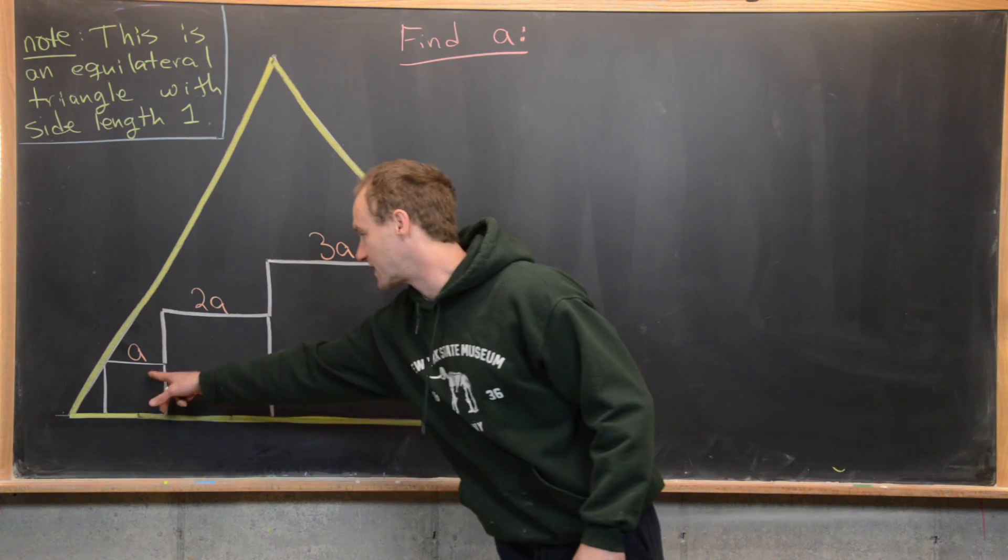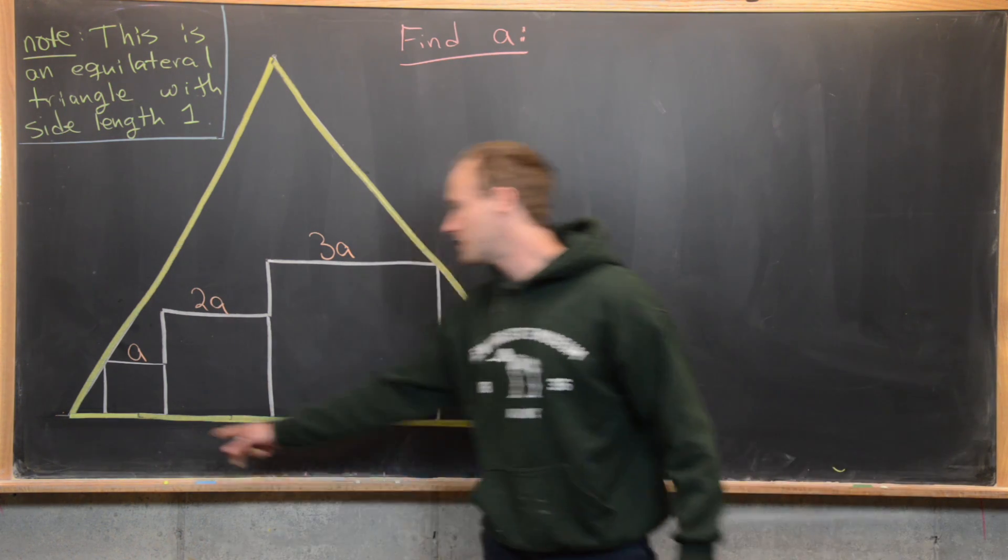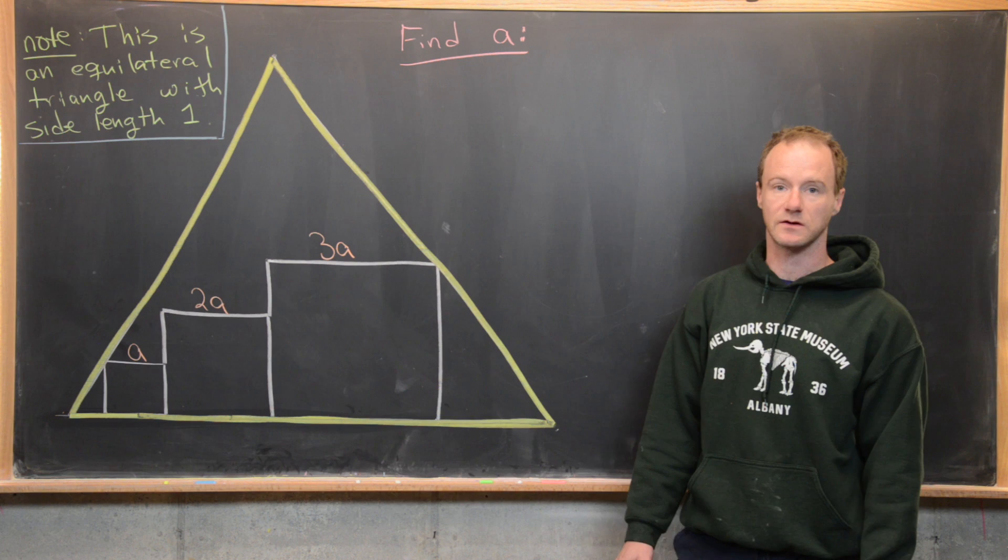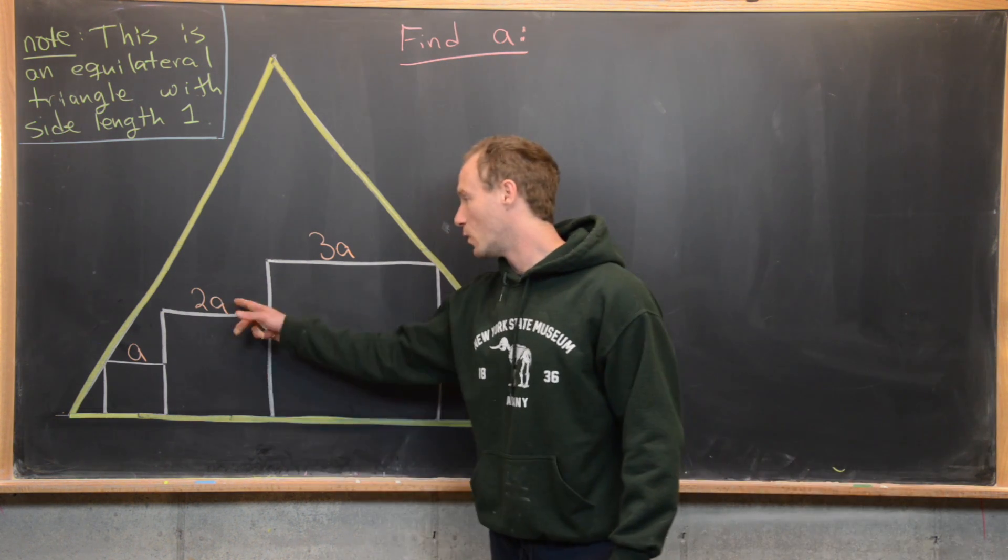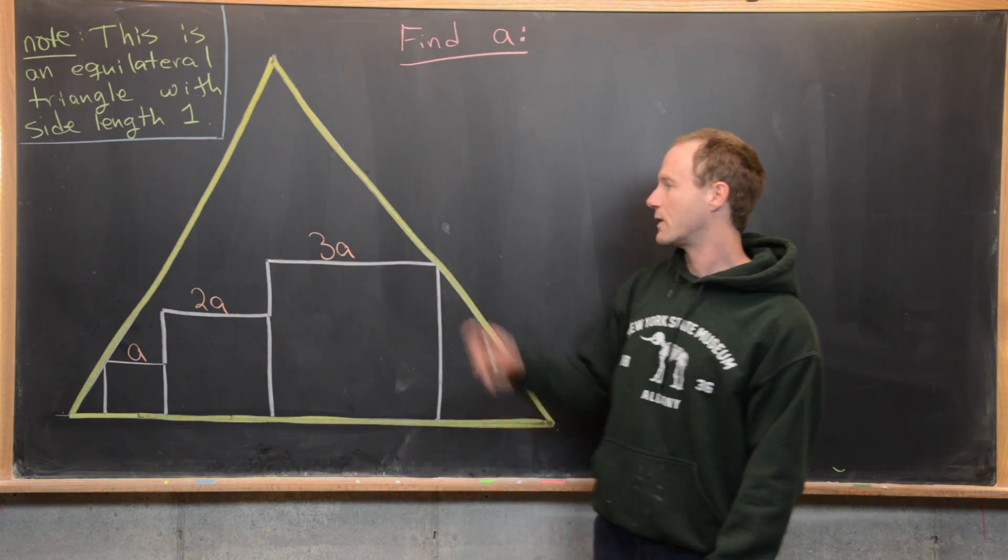So this one has length a and one of the vertices is on the side of the equilateral triangle. The other side is completely contained in the side of the equilateral triangle. Next to that we've got one of length 2a side length 2a.